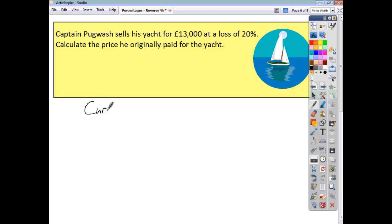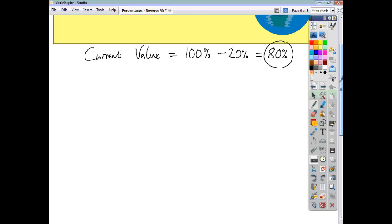So for this question, the current value of the yacht is less than what was paid for it by Captain Pugwash. That's the original price minus 20%, which is 80%. Say what you know. You know that this £13,000 is 80% of what Captain Pugwash paid. So 80% is equal to £13,000.